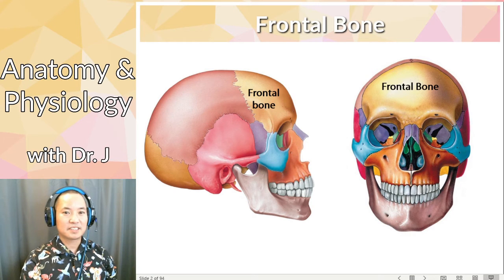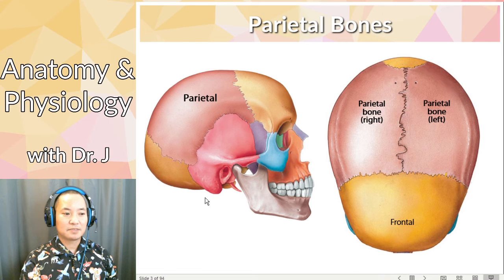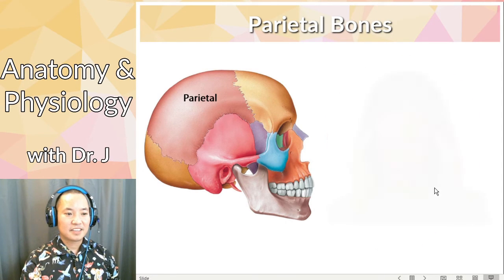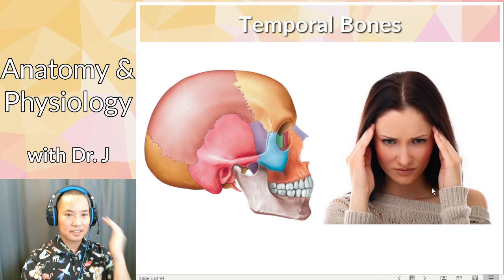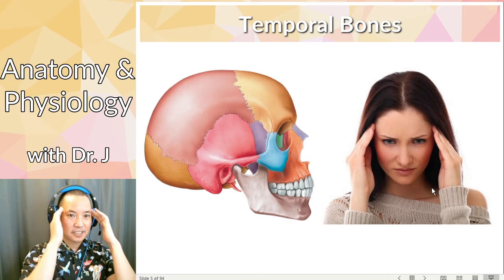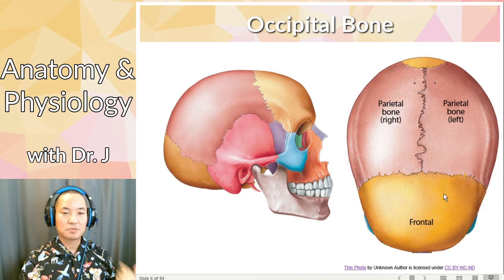We talked about some of the biggest and broadest cranial bones — these are the ones that encase your brain. We have the frontal bone in front, then two parietal bones, a left and right. Then you have the temporal bones, two of them, a left and right temple, and then the occipital bone — just one in adults, located in the back.